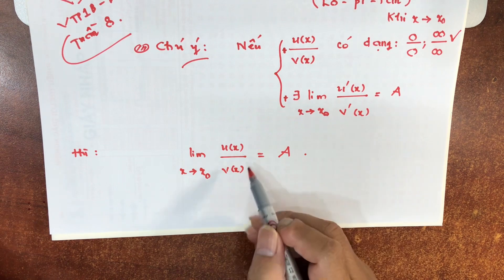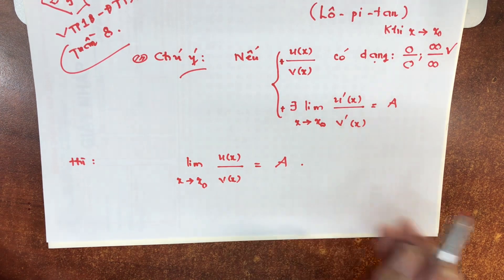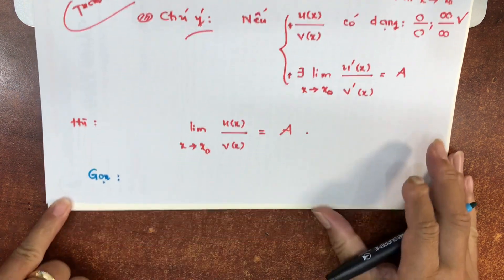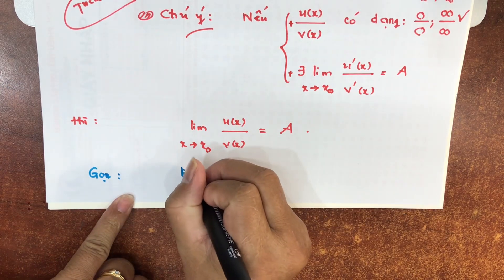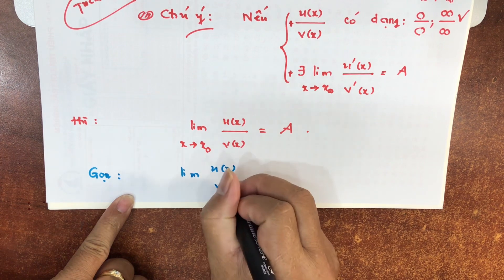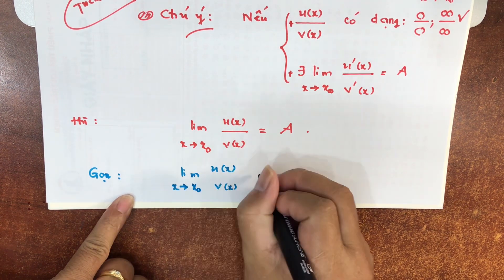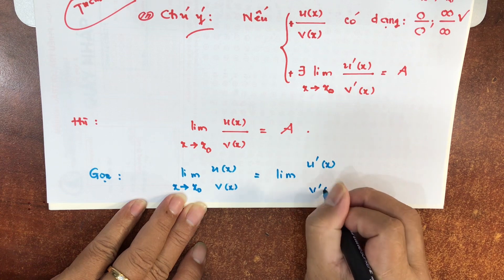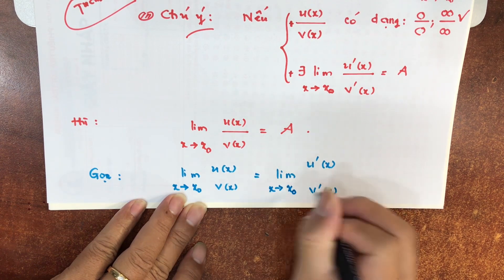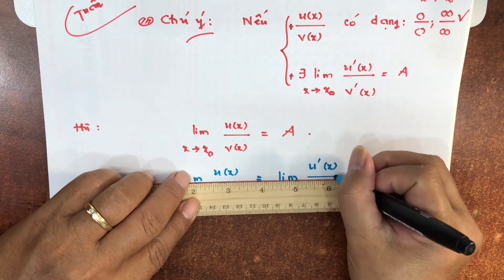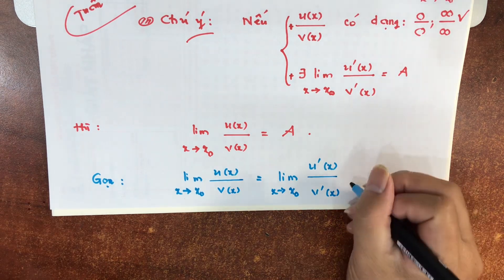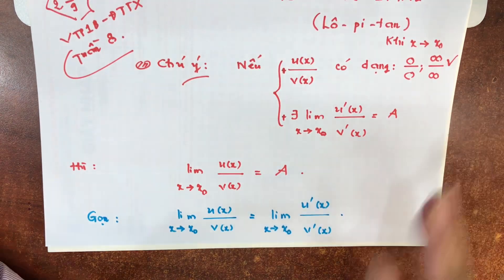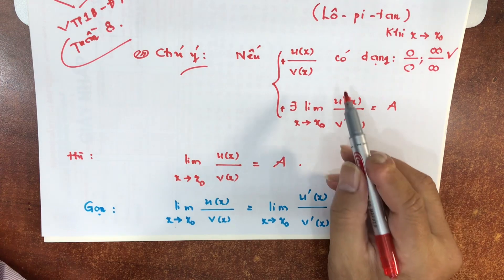Nếu phát biểu cho chuẩn mực thì như thế, nhưng chúng ta thường nói gọn là: lim của U/V khi x tiến về x₀ sẽ bằng lim của đạo hàm tử số chia đạo hàm mẫu số khi x tiến về x₀. Đó là cách nói tắt cho dễ nhớ. Về mặt toán học chính xác thì cả lớp thấy ở đây có 2 giả thiết.